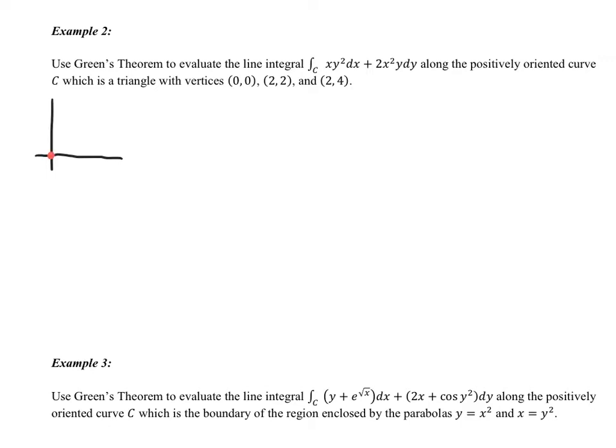We're going to go from (0,0) to (2,2) and (2,4). And it's positively oriented, which means that we're going to go in a counterclockwise fashion like that.